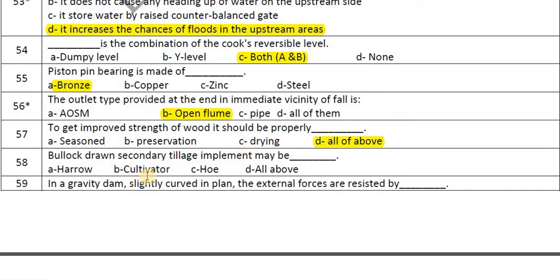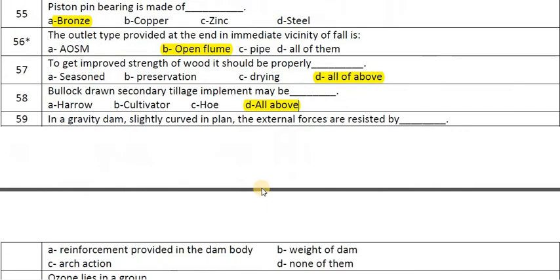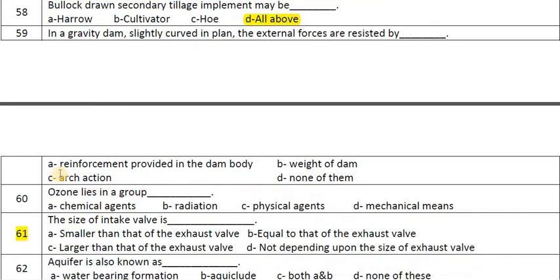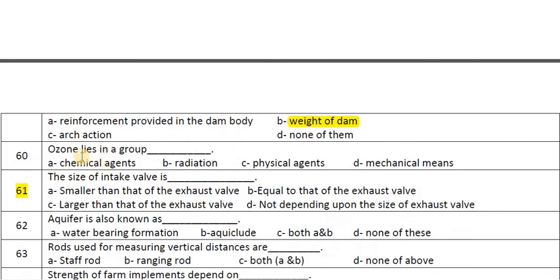Tillage implements may be a harrow, cultivator, hoe, or all of the above. In a gravity dam slightly curved in plan, the external forces are resisted by the weight of the dam. Ozone lies in the chemical group of oxidizing agents.